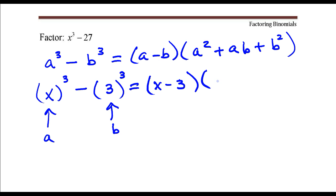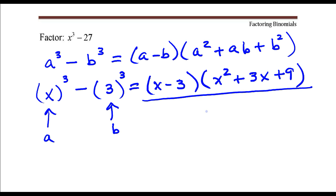So it would be x² plus a times b, so it would be x times 3, or we write that as 3x plus b², so this would be 3², that's 9. And that's the complete factorization of this binomial.